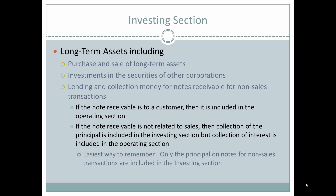The Investing Section focuses on long-term assets. It does not include net income, current liabilities, or current assets. It covers the purchase and sale of long-term assets, investments in securities of another corporation, and lending and collecting money on notes receivable for non-sales transactions. If a note receivable is to a customer, it's included in the operating section. If it's not related to sales, the collection of the principal is in the investing section.